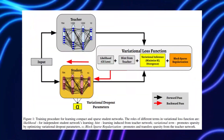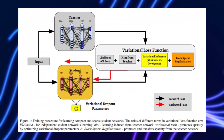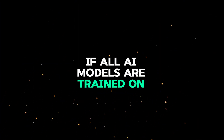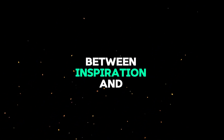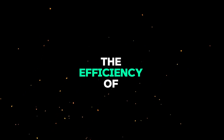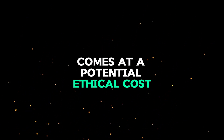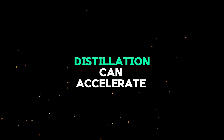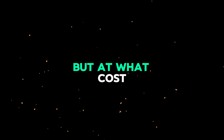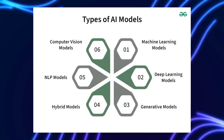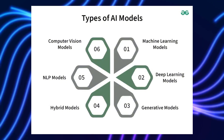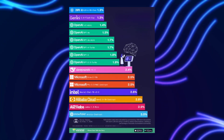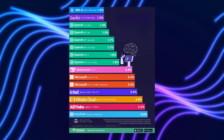Why is it controversial? Because while distillation is a common practice, it blurs the line between inspiration and imitation. If all AI models are trained on past data, where do we draw the line? The efficiency of distillation comes at a potential ethical cost — when does learning from existing models become outright copying? Distillation can accelerate AI growth, but this debate has real-world implications for how AI models are developed and deployed.